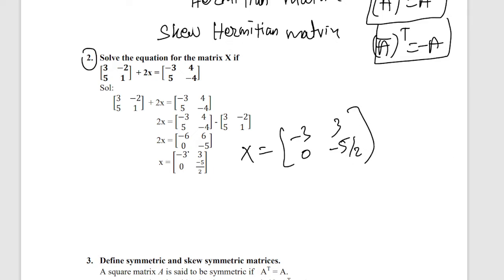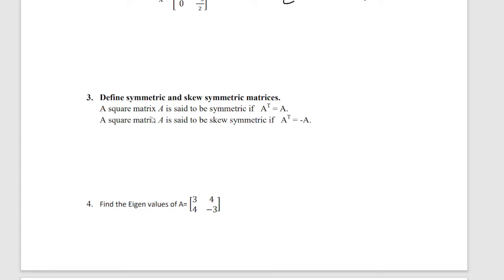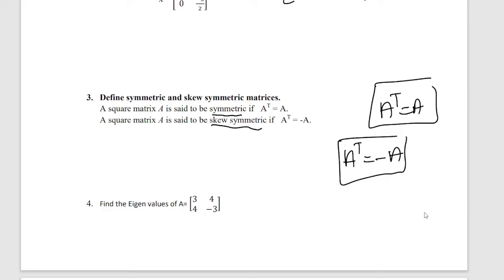X equals A — very simple problem. Just separate the matrices, divide, and find the x value. Symmetric matrix: A transpose = A (same). Skew-symmetric matrix: A transpose = minus A. If A transpose = A, it is symmetric; if A transpose = minus A, it is skew-symmetric.